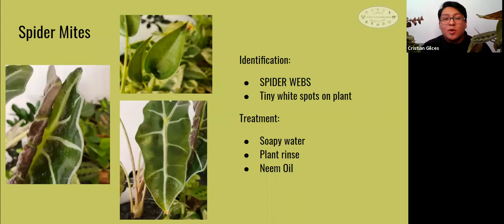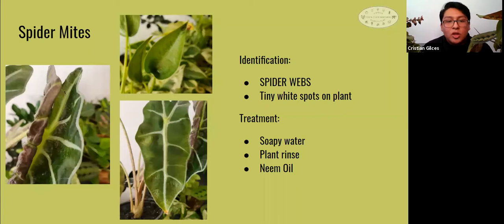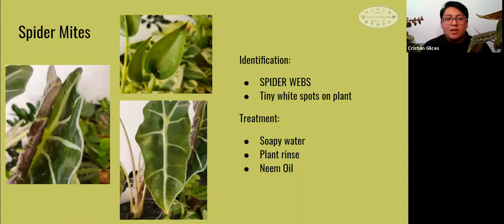If you notice spider webs on your plant, you caught the mites later on — this is why they are called spider mites, because of the webs they form. On screen you can see my alocasias that got infested. The little white dots are visible, and my Tiny Dancer alocasia's leaves actually formed into a cup shape because of the webs. If you have alocasias, be very careful because they are super spider mite prone. Removal is fairly easy with rinsing, neem oil, and insecticidal soap.